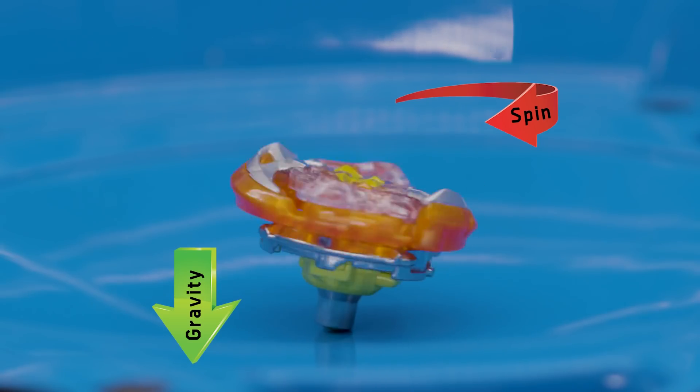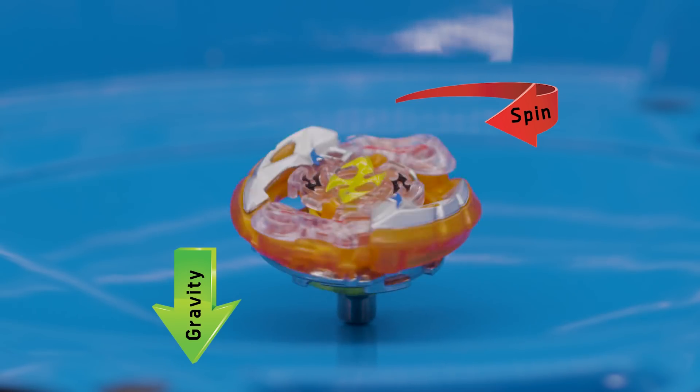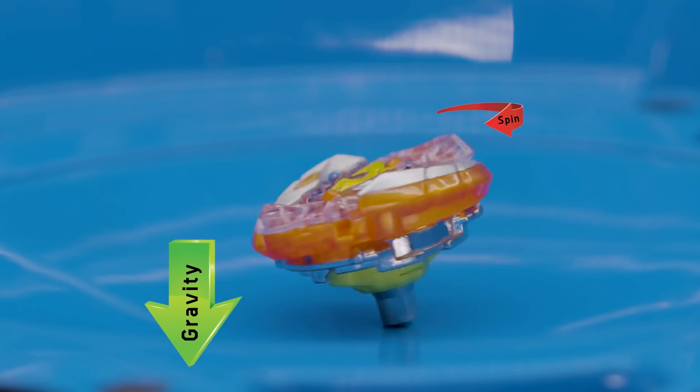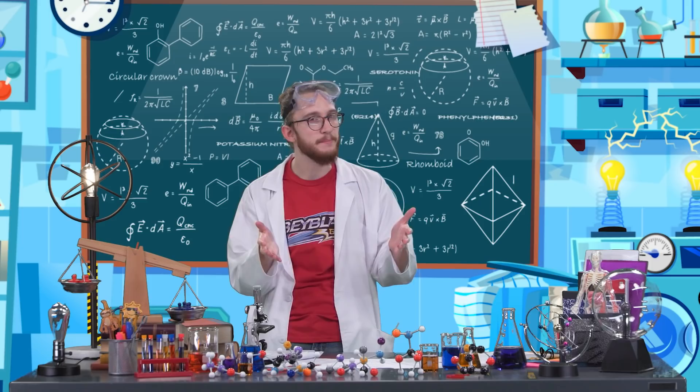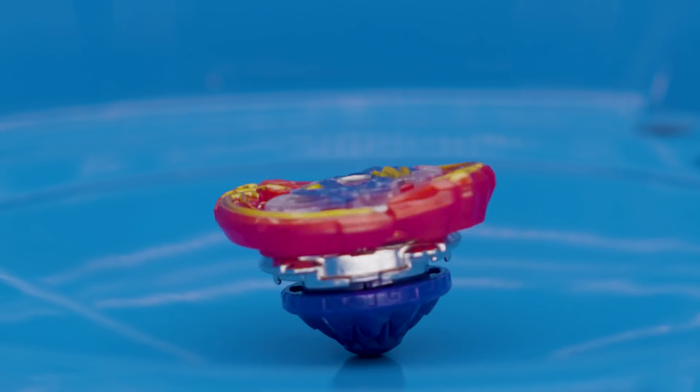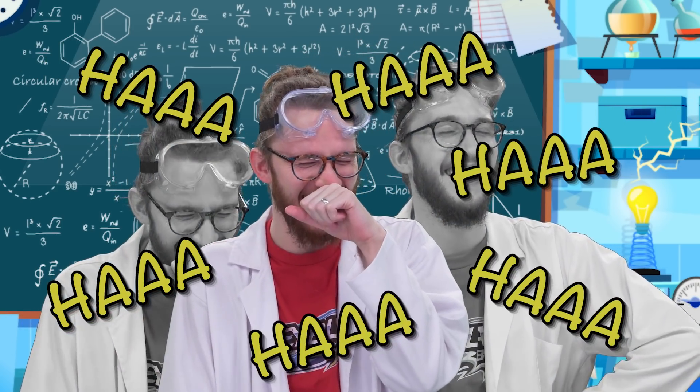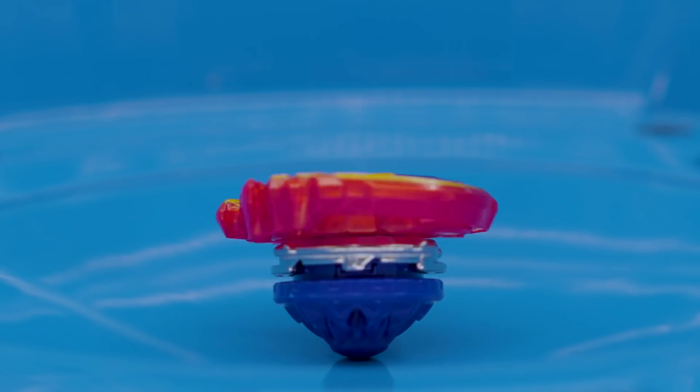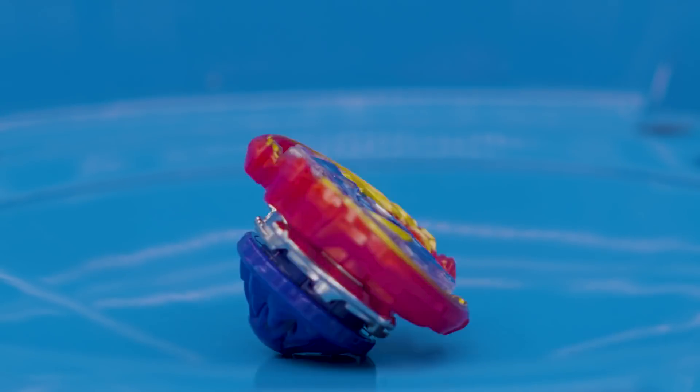The two forces, gravity and spin, combine to angle diagonally instead of straight down or straight across. And so they make the Beyblade lean to the side as it slows down. As the Beyblade leans to the side, its tip touches more of the stadium. And so friction is increased. And so the Beyblade slows down even more. As the spin slows, the horizontal force can no longer keep the downward force of gravity at bay. And so the Beyblade just topples over.